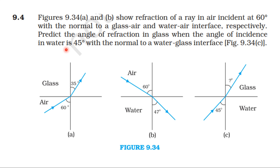From NCERT textbook, from the topic Ray Optics and Optical Instruments, question 9.4. Figures 9.34 A and B show refraction of a ray in air incident at 60 degrees with the normal to a glass-air and water-air interface respectively. Predict the angle of refraction in glass when the angle of incidence in water is 45 degrees with the normal to a water-glass interface.